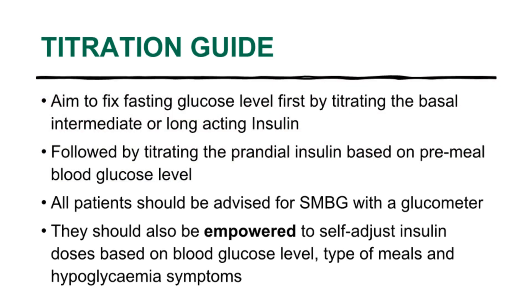This picture shows the action of the basal bolus insulin regime throughout the day. Prandial insulin given three times before each meal is represented in yellow, and basal insulin given before bed in green. For titration, the fasting pre-breakfast glucose target should be fixed first by adjusting the pre-bed intermediate or long-acting insulin, followed by titration of prandial insulin based on pre- and post-meal glucose levels.